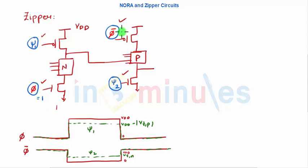So let us say phi is equal to 1 means phi bar equal to 0. My outputs are taken from here and output is taken from here. So when phi is 1, this is on. When phi bar is 0, we know this is on and vice versa.